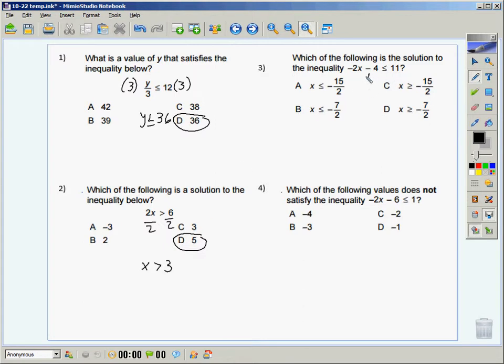And number three, you'd have added four to both sides. You'd have had a negative 2x is less than or equal to 15. You'd have had to divide both sides by a negative two, but when I divide by a negative, I'd have to flip my inequality symbol. Which is why the correct answer for this one is C.